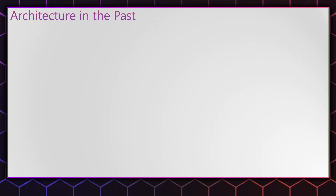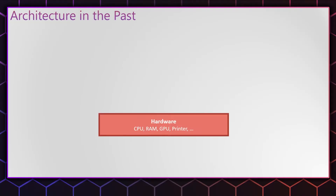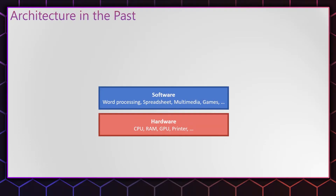Here's a quick diagram of the architecture of the past. On the bottom there's the hardware — CPU, RAM, the graphics card, and output and input devices like printers and keyboards. And directly on top of that there's the software: word processing, spreadsheets, multimedia, games — though games weren't as popular back then because graphics output was really limited. Typically on smaller systems only one user could work at a time. A little later, when Unix systems became present, they became multi-user systems.